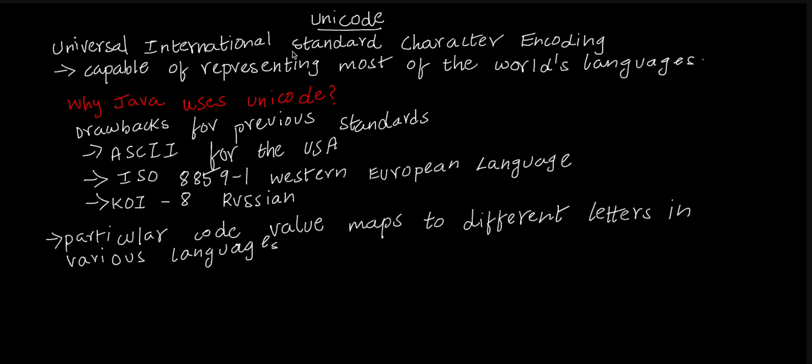Machine understands only binary values. We need to give our information in a format which can be understood by our machine so that it can calculate and operate on that information.